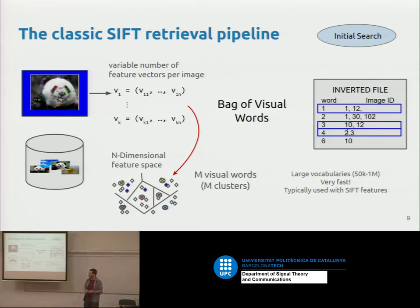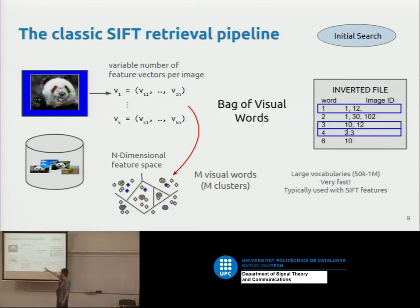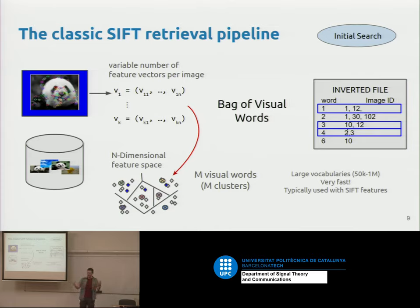This is how retrieval was done before deep learning. Variations like Fisher vectors improve performance, but the key advantage of this bag-of-words representation is sparsity. With a million visual words, most won't appear in a given image, so we get a sparse representation. Sparse representations are highly scalable — your image is effectively like a document, and we know how to search documents at internet scale. The key trick is an inverted file that maps words to images containing those words.